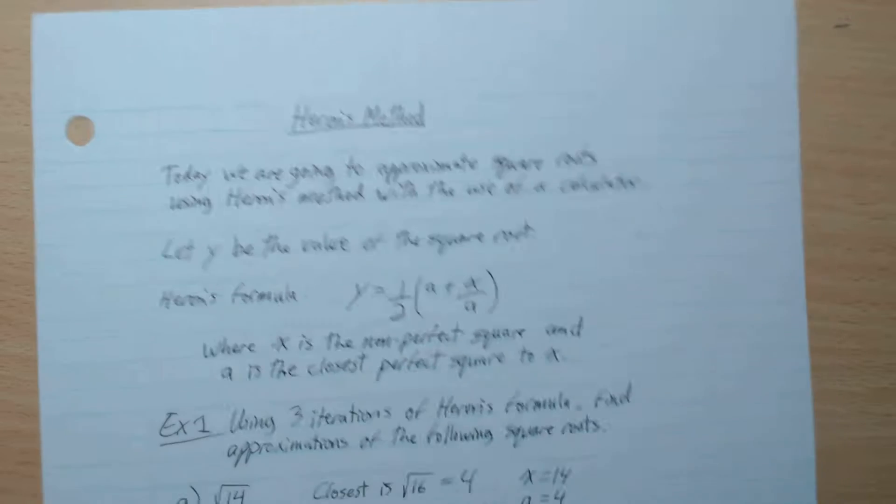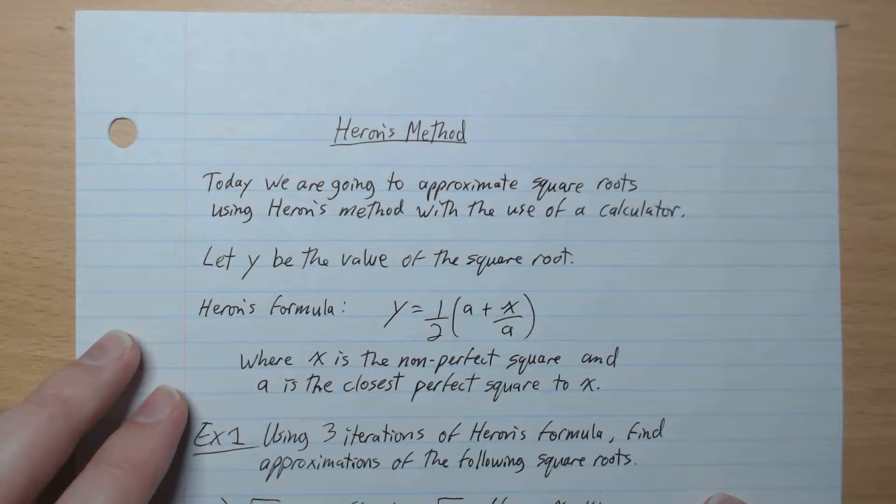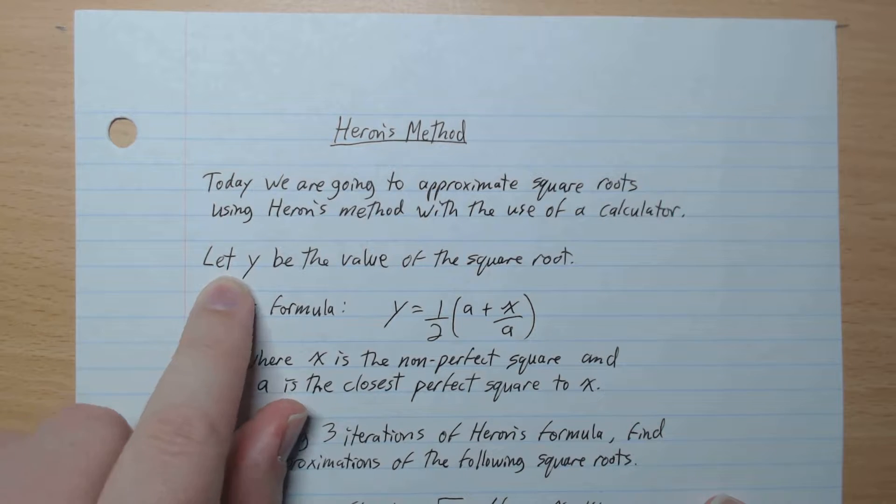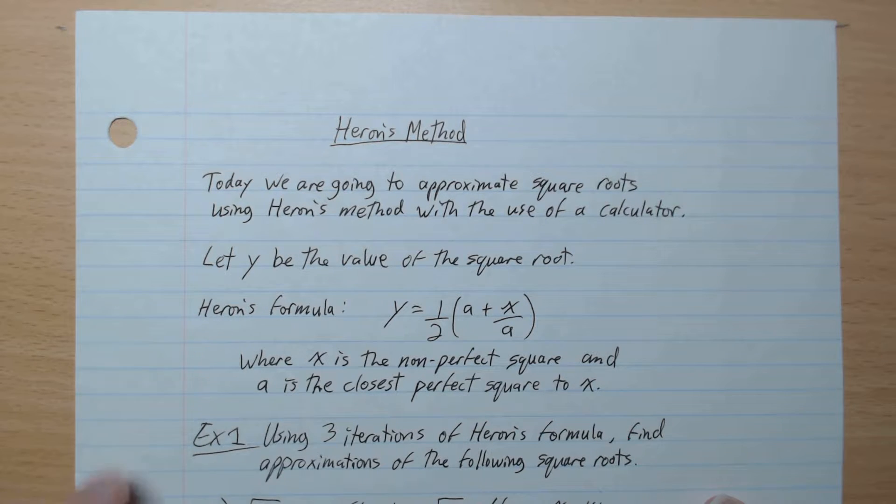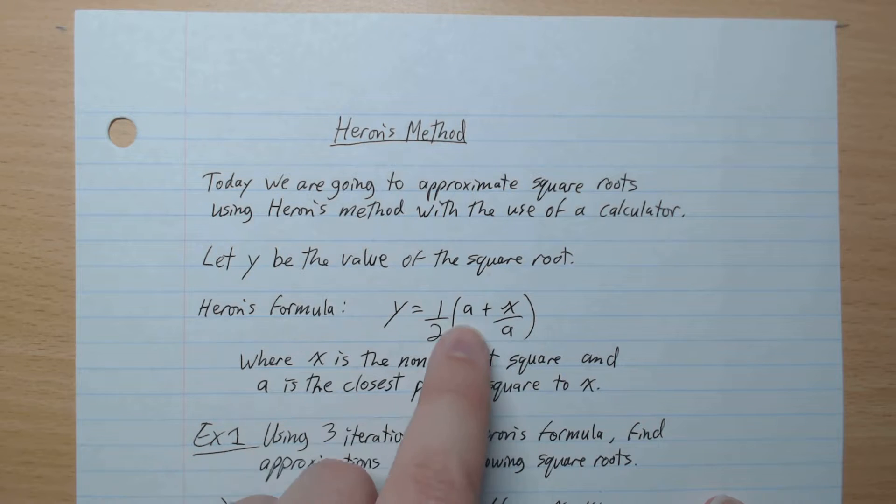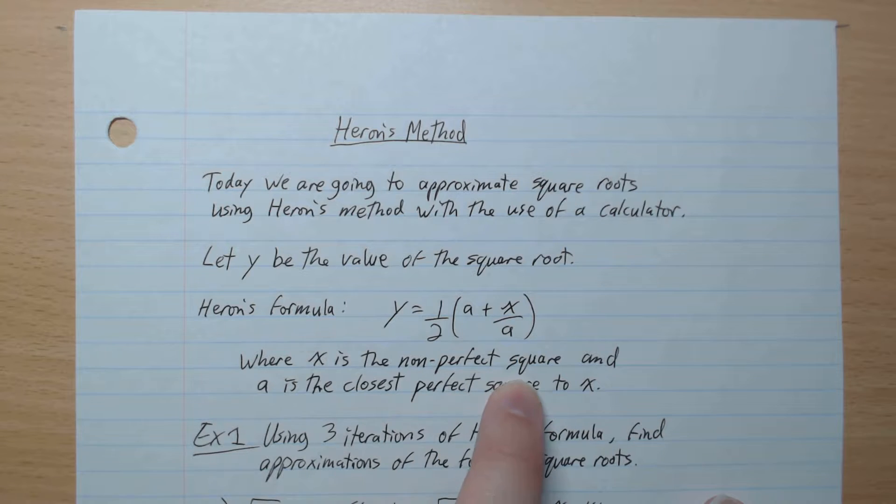Hey everyone, welcome back. Today we're going to look at Heron's method. We're going to approximate square roots using Heron's method with the use of a calculator. Let y be the value of the square root. Here's Heron's formula: y equals a half times a plus x over a, where x is the non-perfect square and a is the closest perfect square to x.